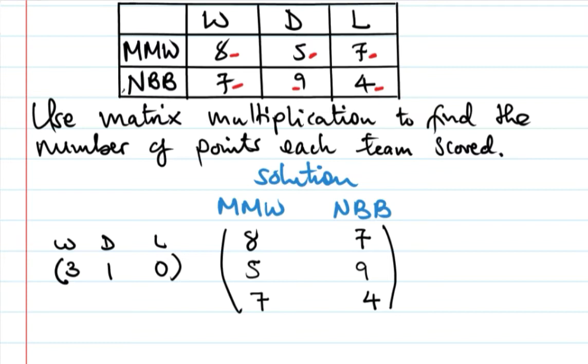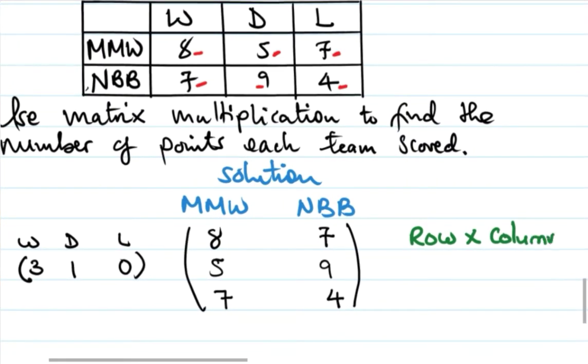We multiply row by column - the row elements are multiplied by the corresponding column elements and then summed. That's how we perform the matrix multiplication.